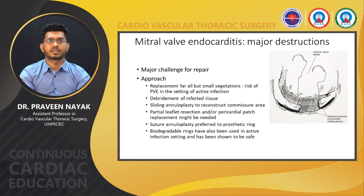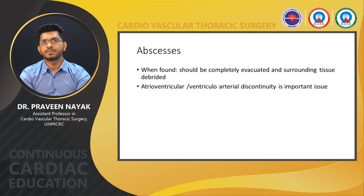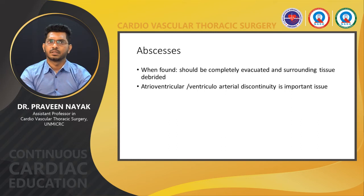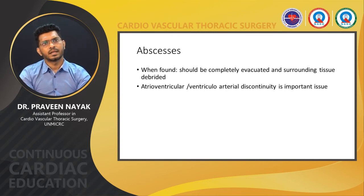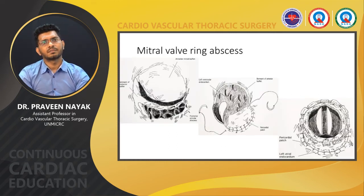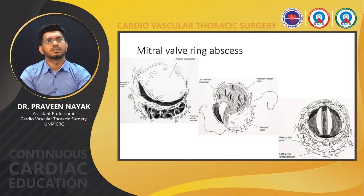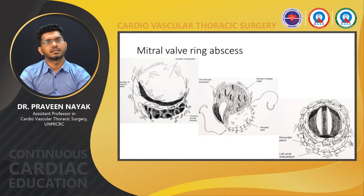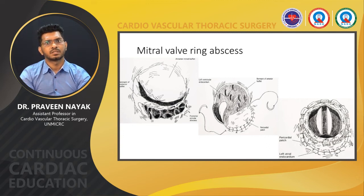Biodegradable rings have also been used in active infection settings and have been shown to be safe. Abscesses, when found, should be completely evacuated and surrounding tissue debrided. Conduction abnormality and atrioventricular or ventriculo-arterial discontinuity are important issues that need to be addressed. In mitral valve ring abscess, the posterior annulus is completely debrided, the abscess is drained, and the native tissue is debrided, followed by pericardial patch reconstruction of the posterior annulus and then prosthetic valve replacement, as shown in the figure.